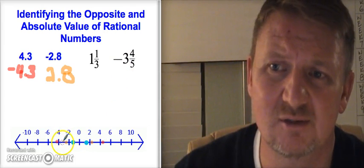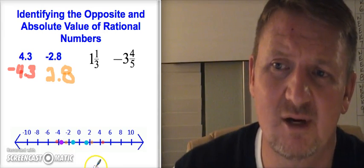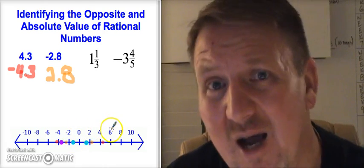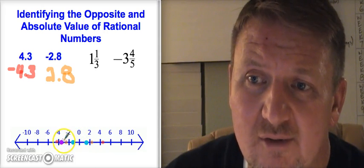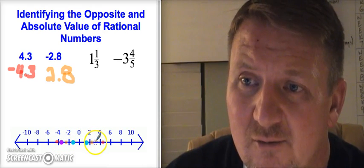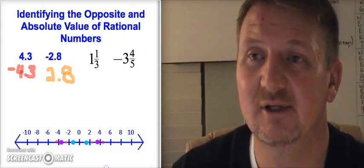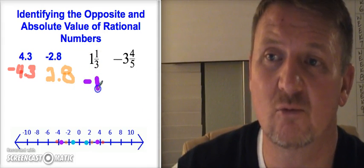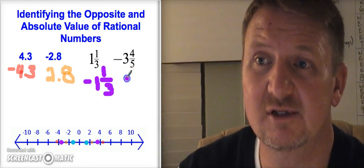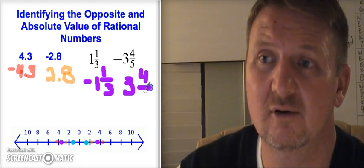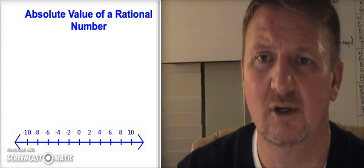For negative three and four-fifths: I go to negative three, which is halfway between negative two and negative four, and then four-fifths is almost all the way to negative four. To find its opposite, I go in the opposite direction the same distance — three to the right, and then almost all the way to four. The opposite of negative three and four-fifths is three and four-fifths. Remember: the opposite is the same distance from zero but in the opposite direction.